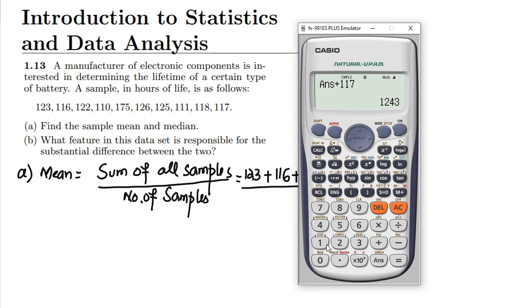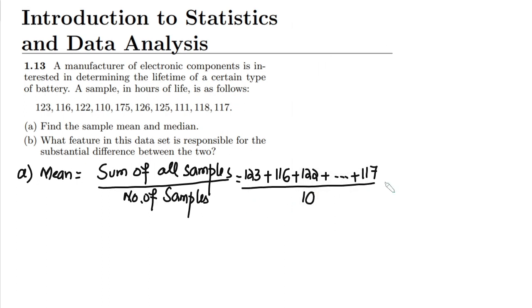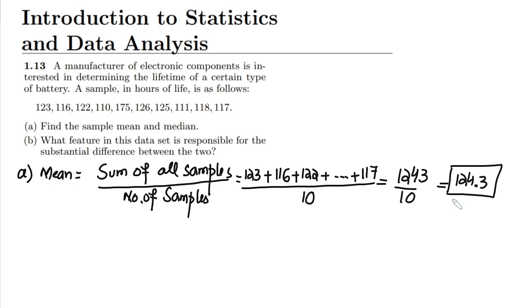So that total is 1243. Here I will have 1243 divided by 10, and the answer will be 124.3. So 124.3 hours is the mean value of the battery life.